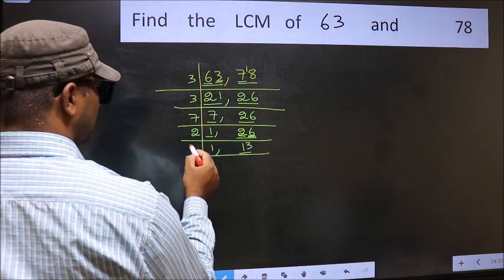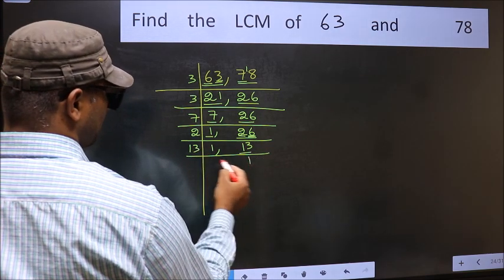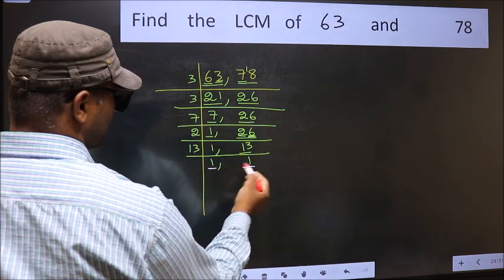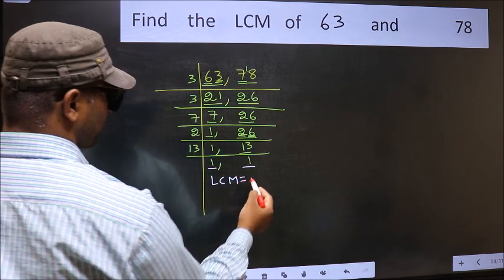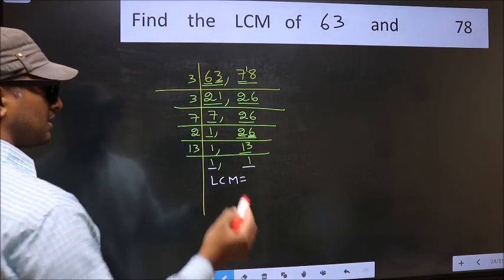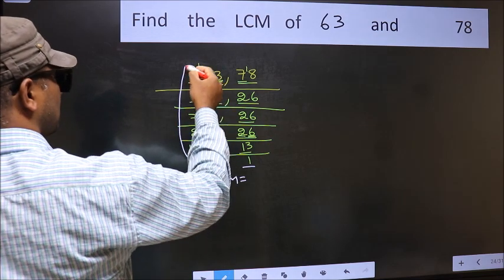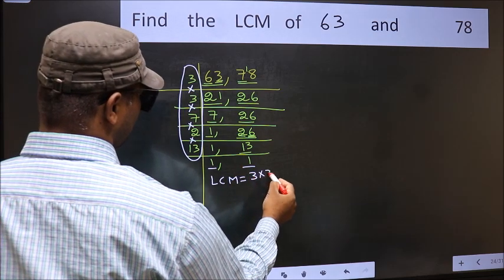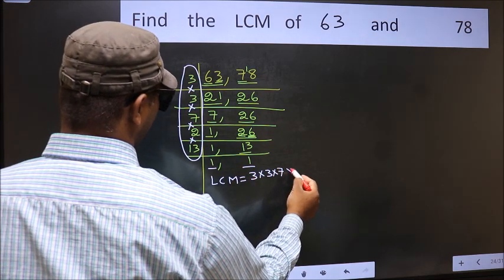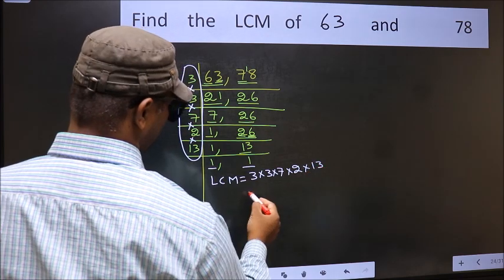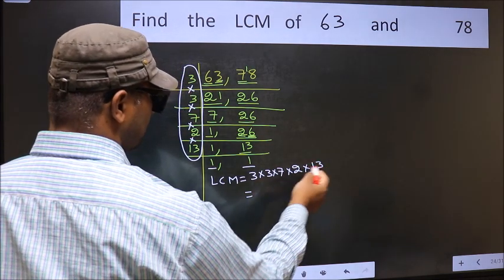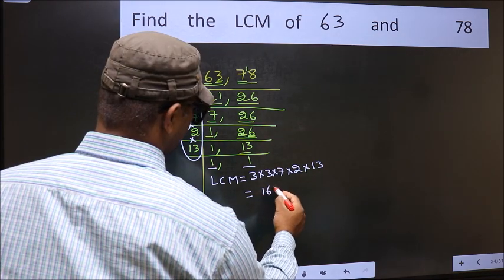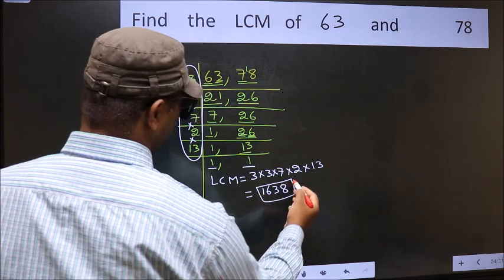Now here we have 13. 13 is a prime number, so 13 times 1 is 13. So we got 1 in both the places. So our LCM is the product of these numbers. That is 3 times 3 times 7 times 2 times 13. When we multiply these numbers, we get 1638 as our LCM.